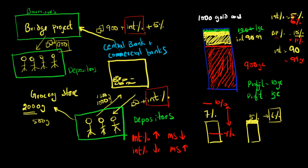There's a very important assumption we've made in all of this: this entire system of a central bank, commercial banks, borrowers, and depositors happens in a vacuum. We've assumed there are no other countries that trade with this country. But as we'll see in the next video, if you have multiple countries on the gold standard, this ability to change interest rates and influence the money supply is severely diminished.